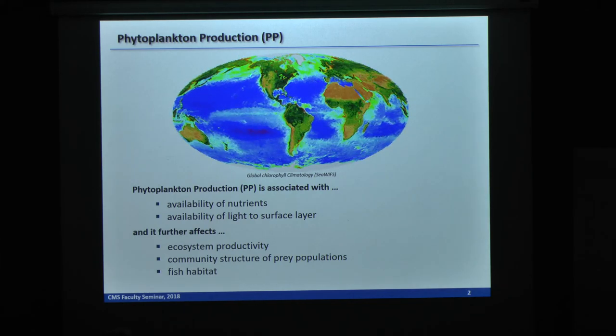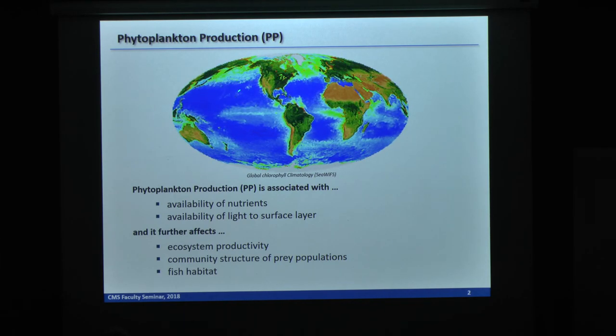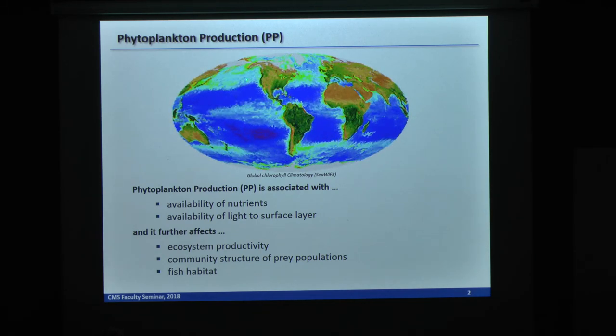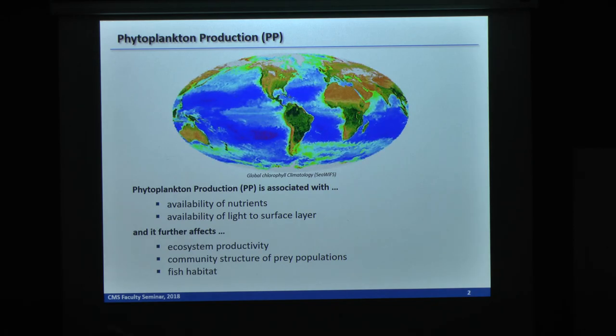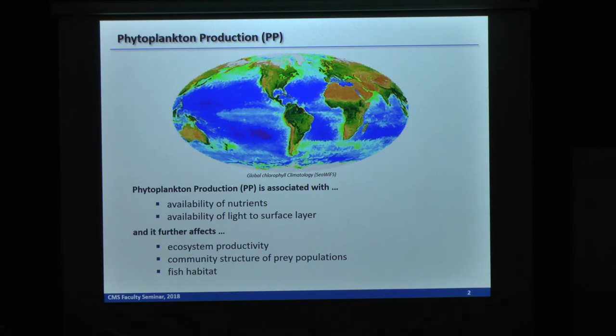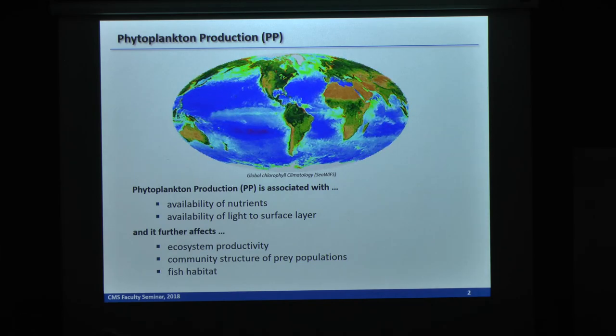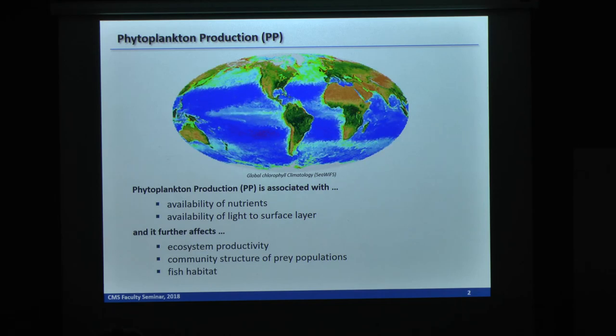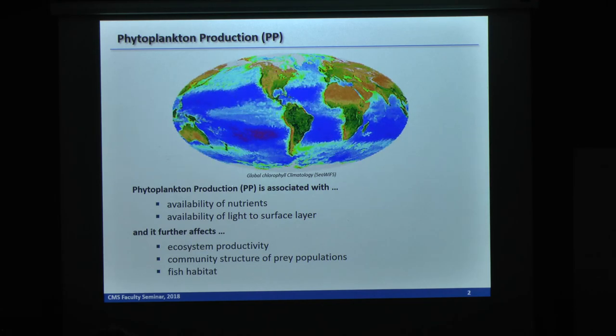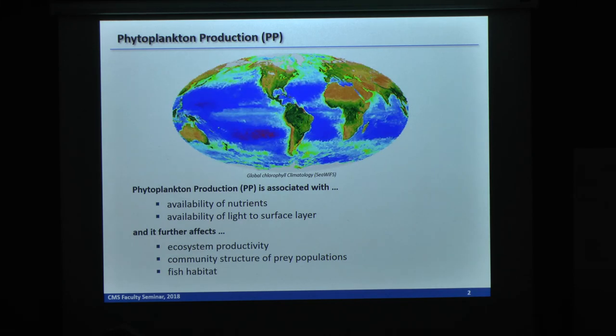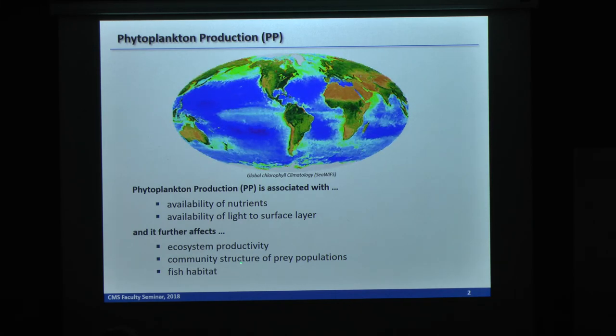If we fix location looking at the temporal evolution of the animation, we'll see that phytoplankton production usually evolves with light availability over the seasonal cycle. Because phytoplankton production forms the base of the trophic levels, energy flow into this level will further affect ecosystem productivity, community structure, and fisheries.